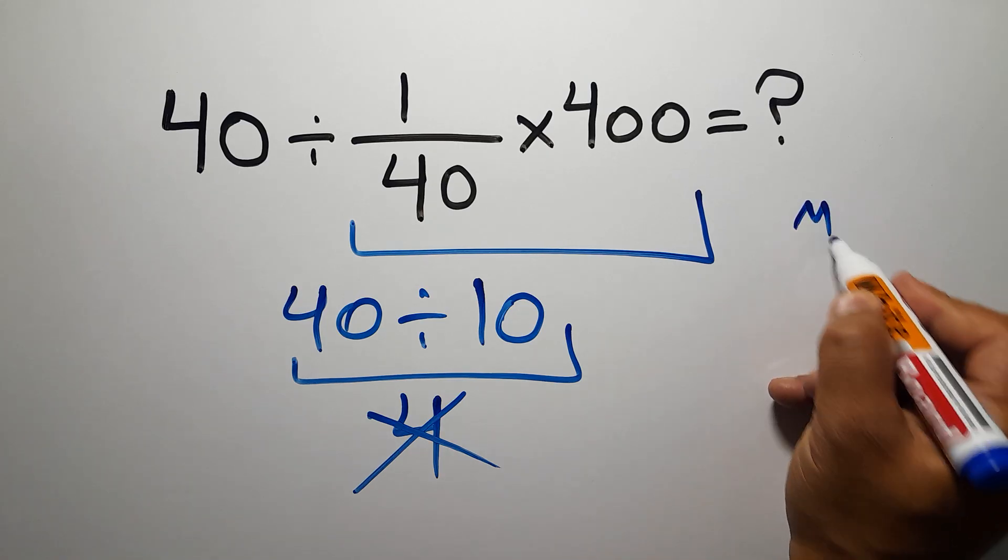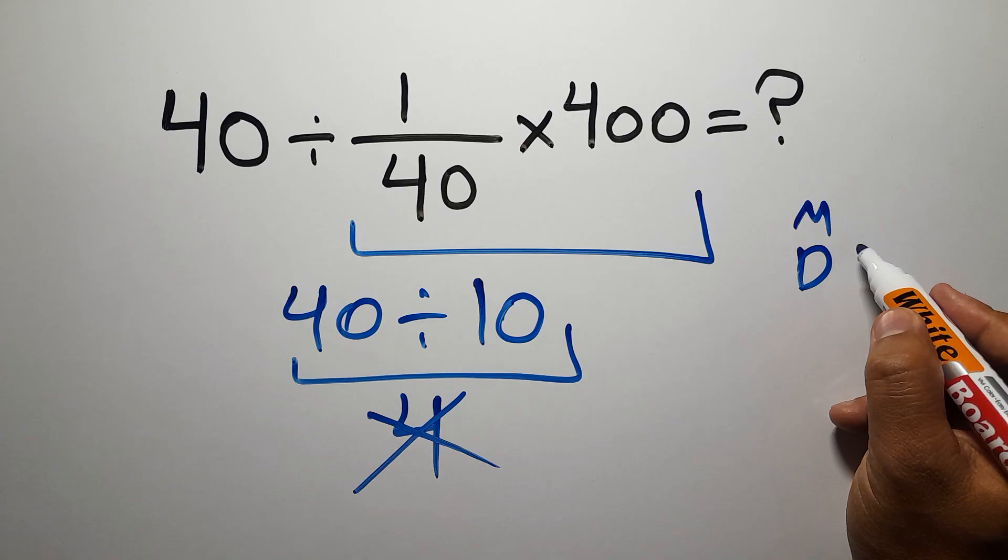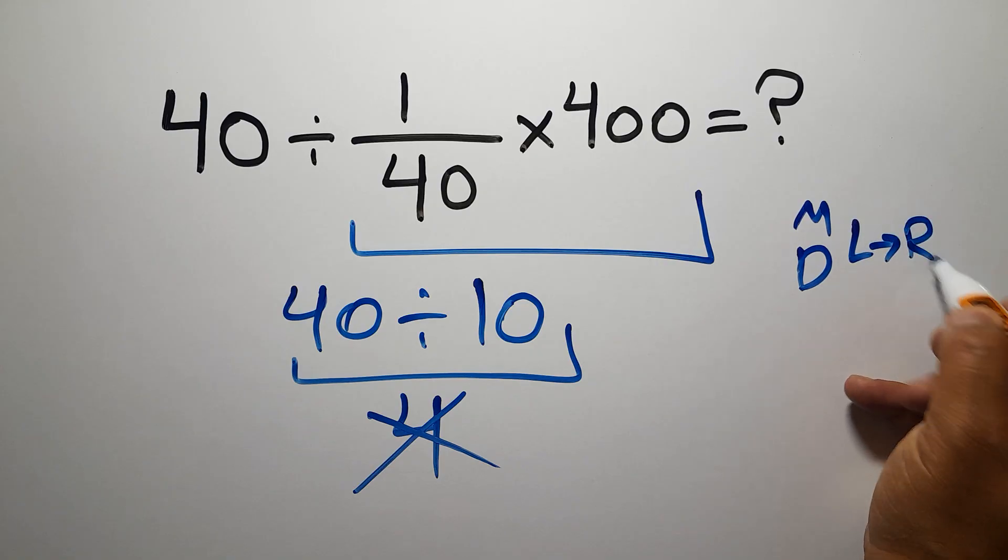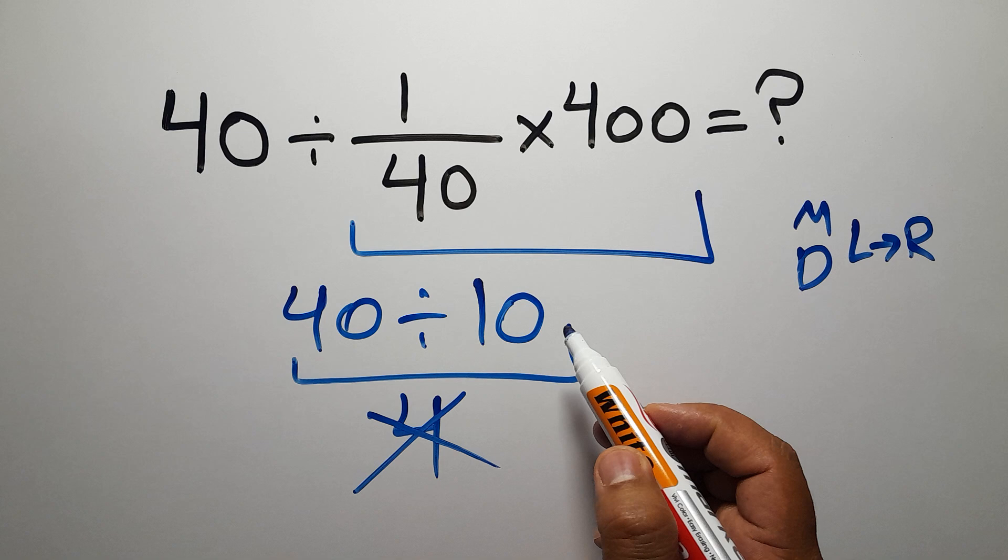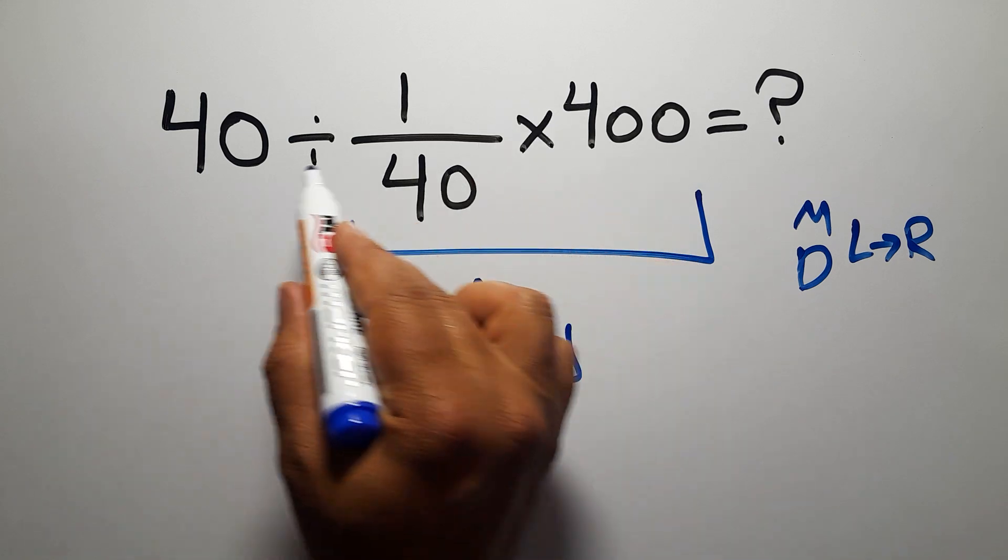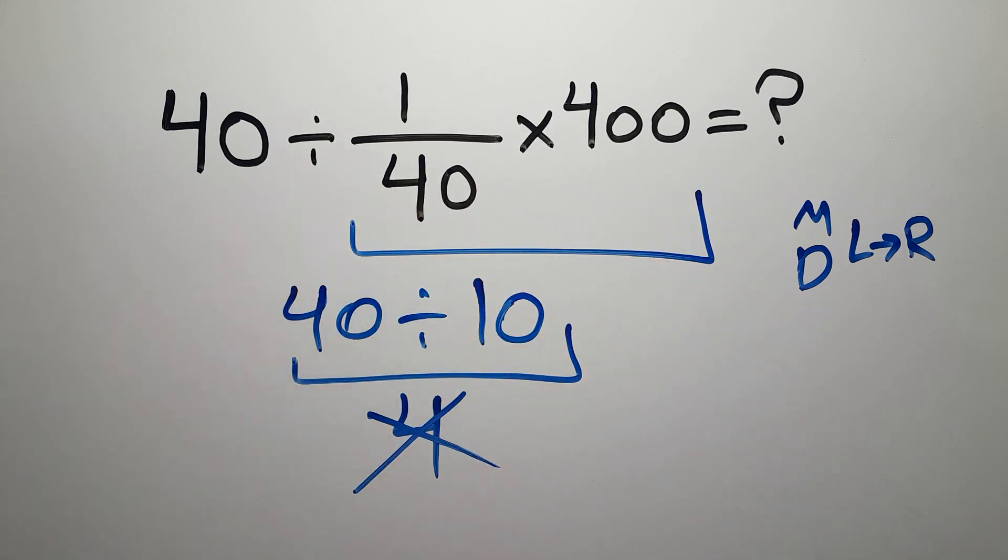Multiplication and division have equal priority, and we have to work from left to right. So here first we have to do this division, not this multiplication. If you do this multiplication before this division, it is wrong.